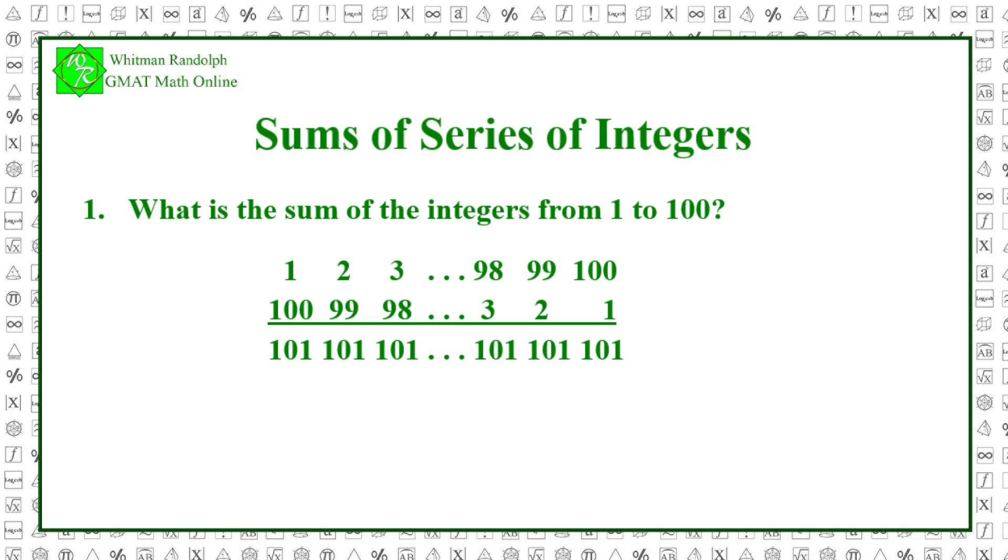Our original problem was to determine the sum of the numbers from 1 to 100. We're now in a position to do that. We have two copies of the series, 1 to 100, and we've added them together to get 100 sums, each equal to 101. If we now add these 100 sums together, we get 100 times 101 equals 10,100.